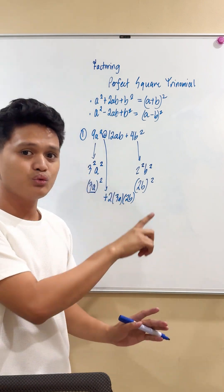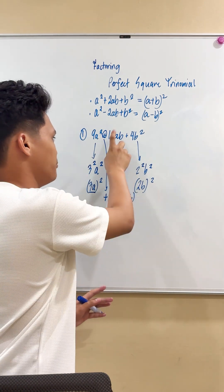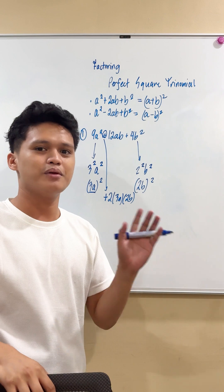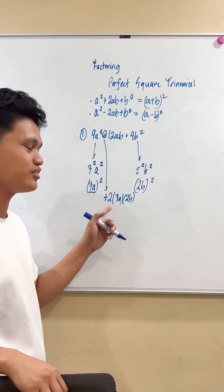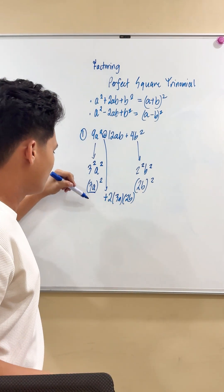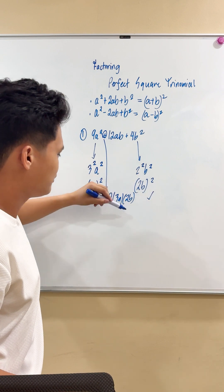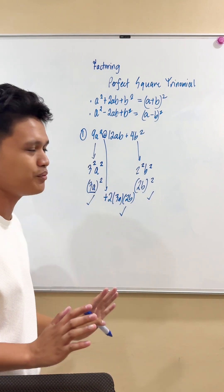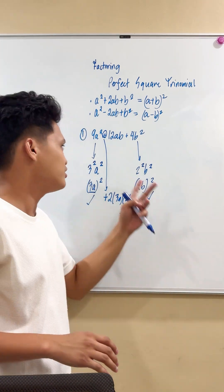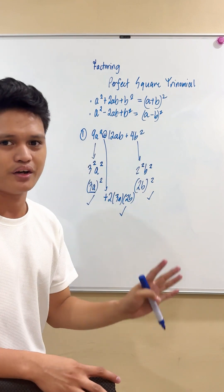And the last test will be determining if the product of 2, 3a and 2b matches the middle term, which is actually the case because 2 times 3 is 6 and 6 times 2 is 12. So since the first term, the last term, and the middle term matches the format, we can say that this expression is actually a perfect square trinomial.